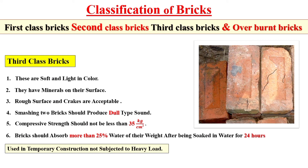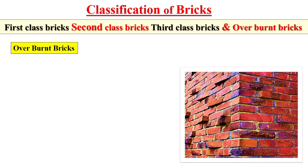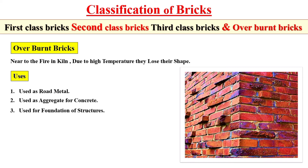Third class bricks are normally used for temporary construction not subjected to heavy loads. Now, the overburnt brick: overburnt bricks are those bricks which are placed near the fire in the kiln. Due to high temperature, they lose their shape but gain maximum strength. Due to this high strength, overburnt bricks are used as road metal, as aggregate for concrete, for foundation of a structure, and for construction of inferior structures.